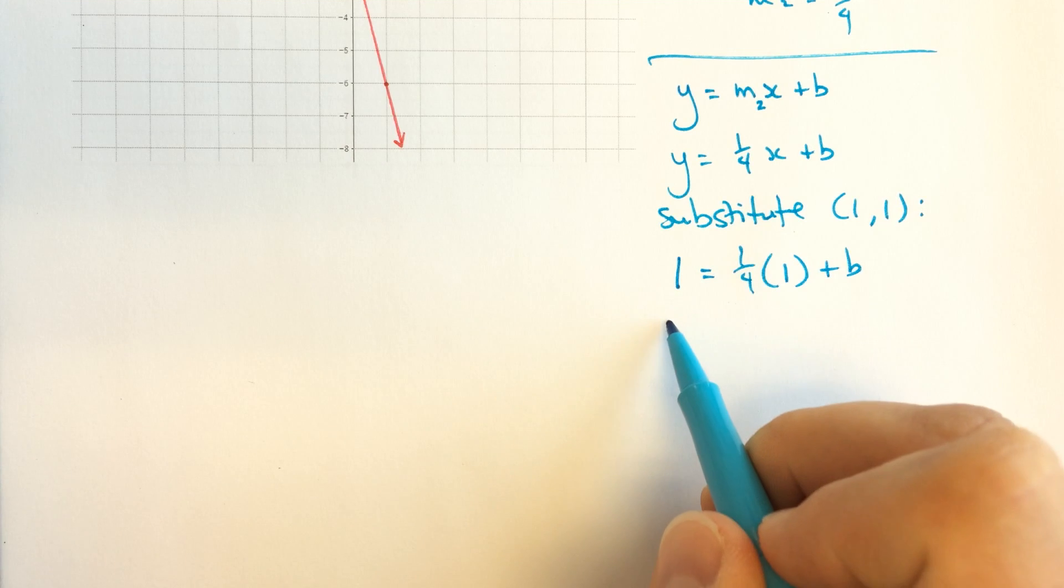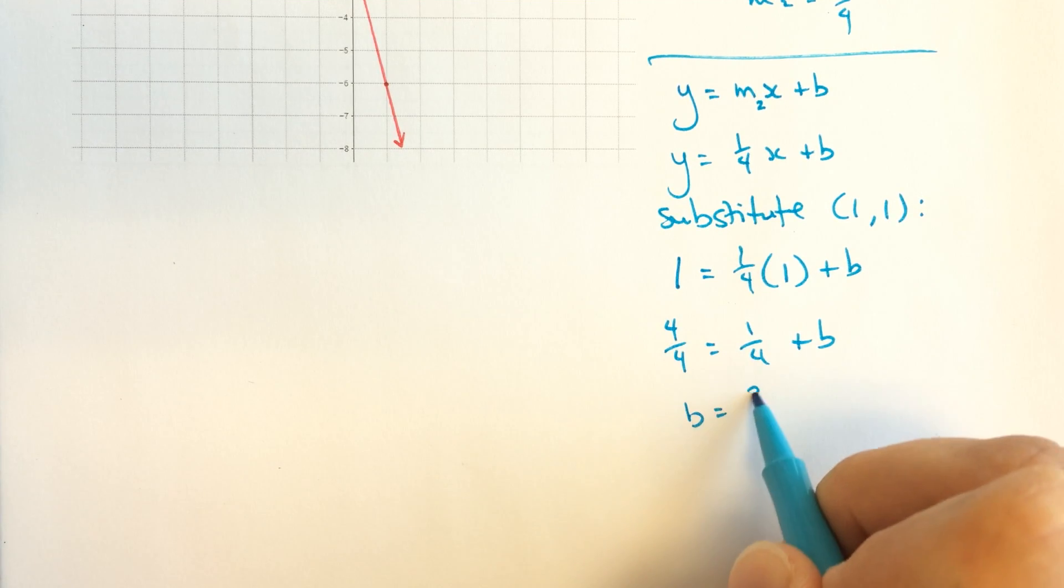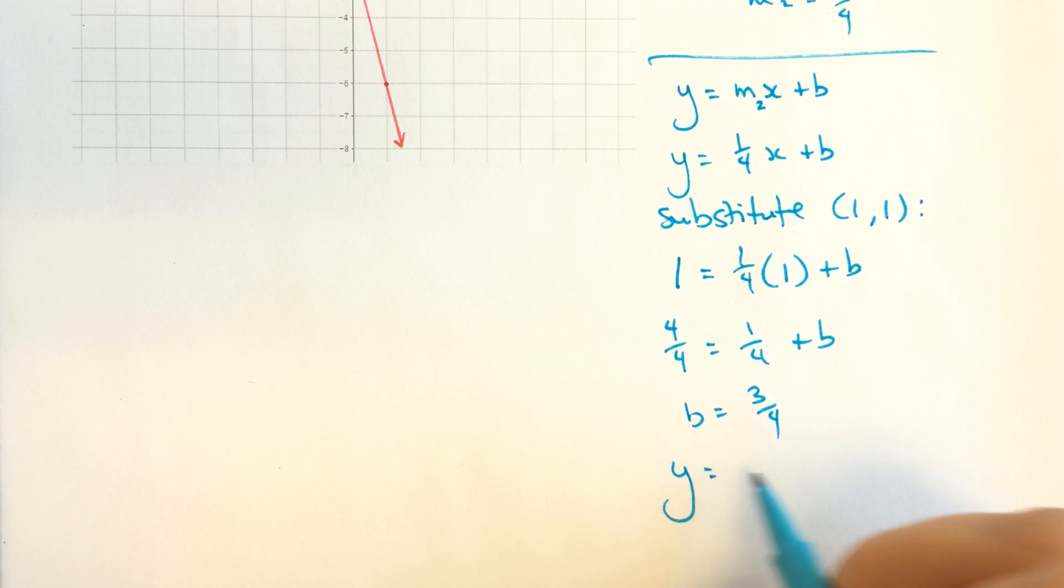So this is going to be in quarters, so I'm going to write this 1 as 4 quarters. This here is 1 quarter plus b. 4 quarters equals 1 quarter plus b. Subtracting a quarter from each side, we get b equals 3 quarters. And our equation then is y equals 1 quarter x plus 3 quarters. There we go.